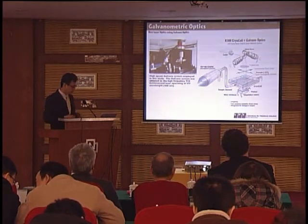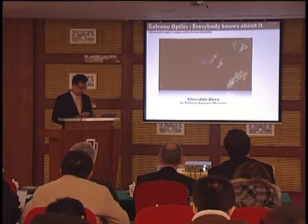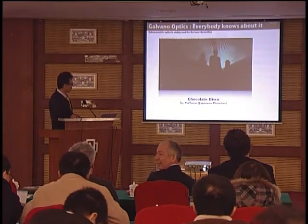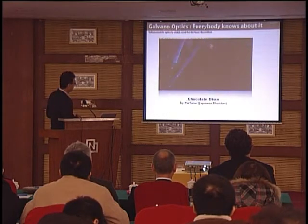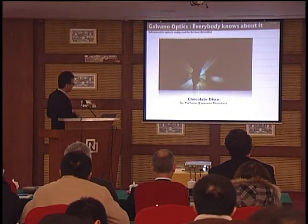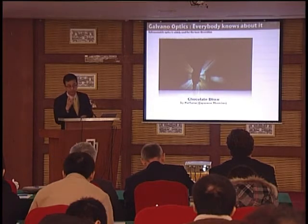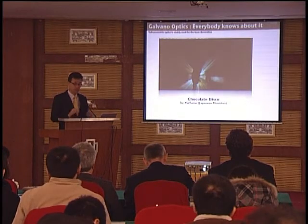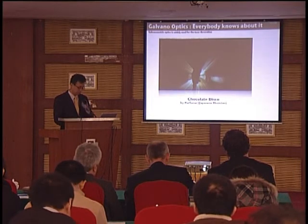This galvanometric optics is quite well-known. For example, this is a sort of galvanic optics — you can see they're using only two lasers, but it looks like many lasers. There are two green lasers and blue lasers, and there are a lot of beams here, but it's only two lasers. The two lasers are using galvano optics, changing the angle of the operations — the same as the galvano optics used in this laboratory.